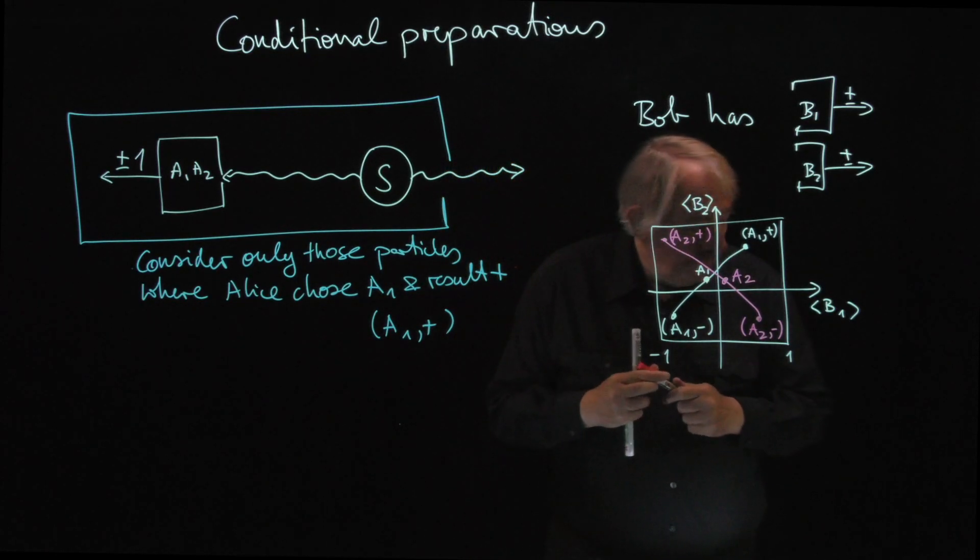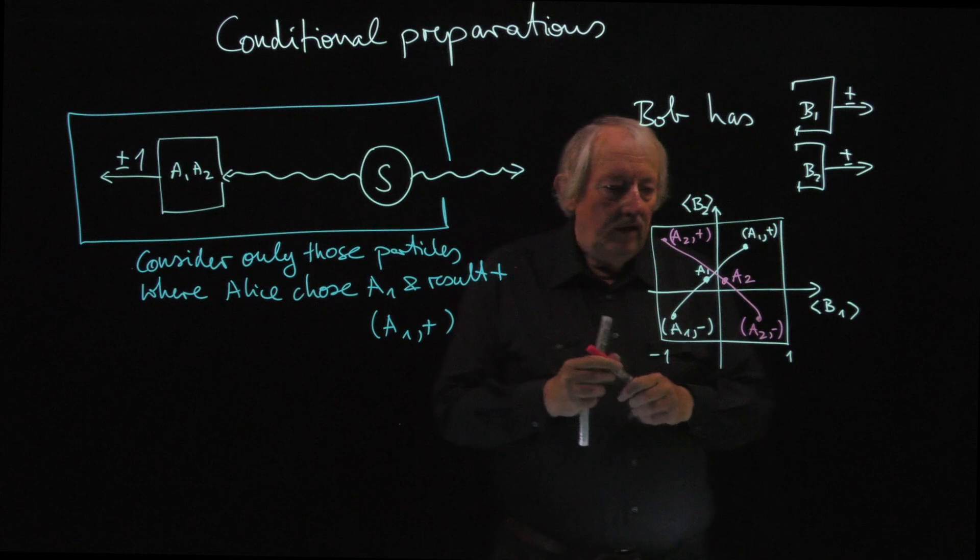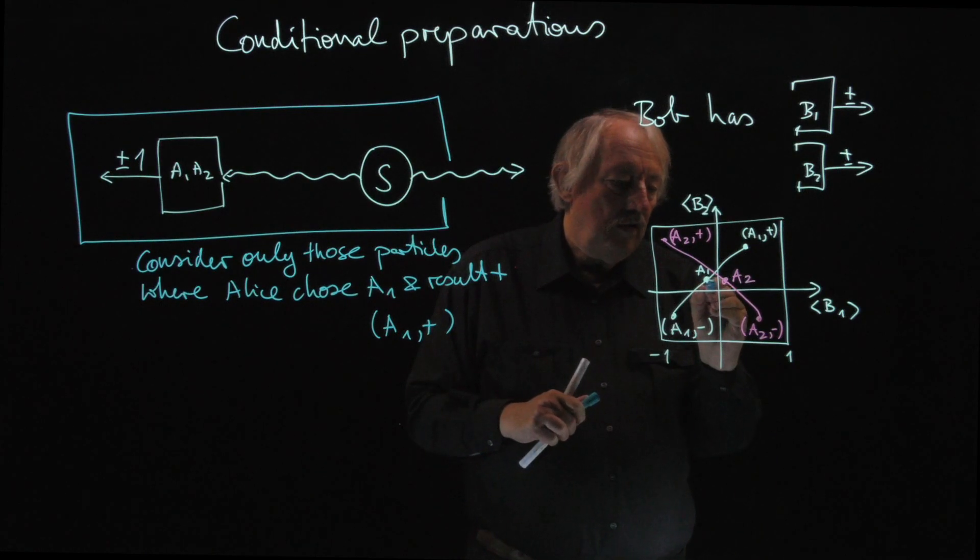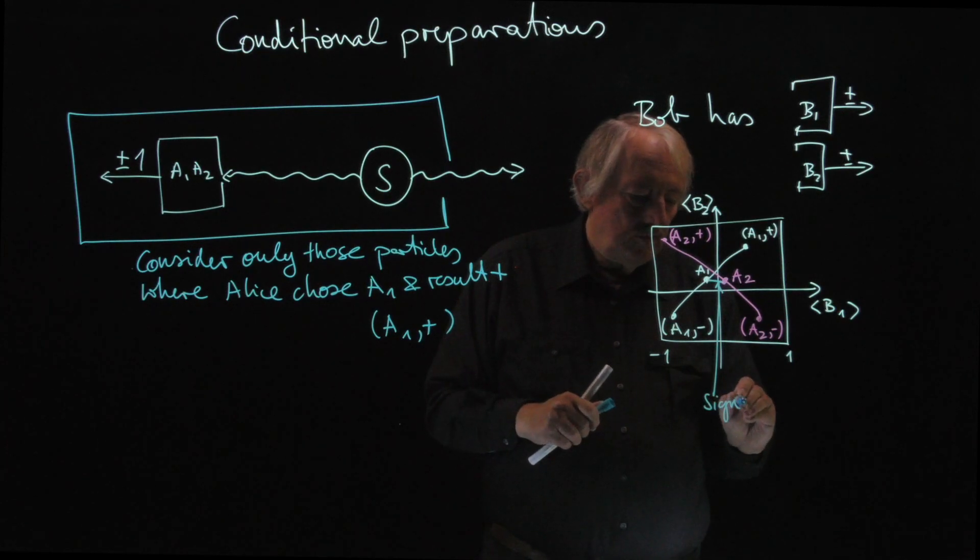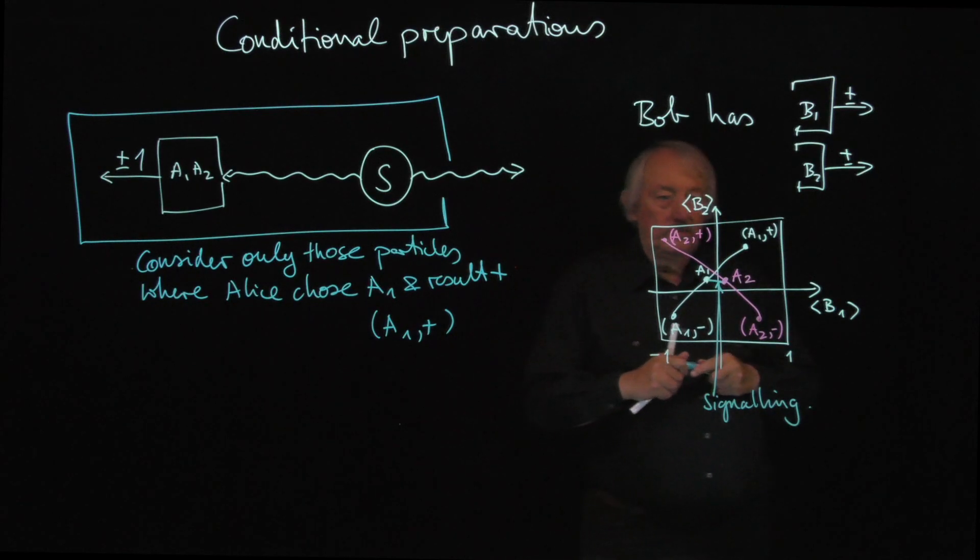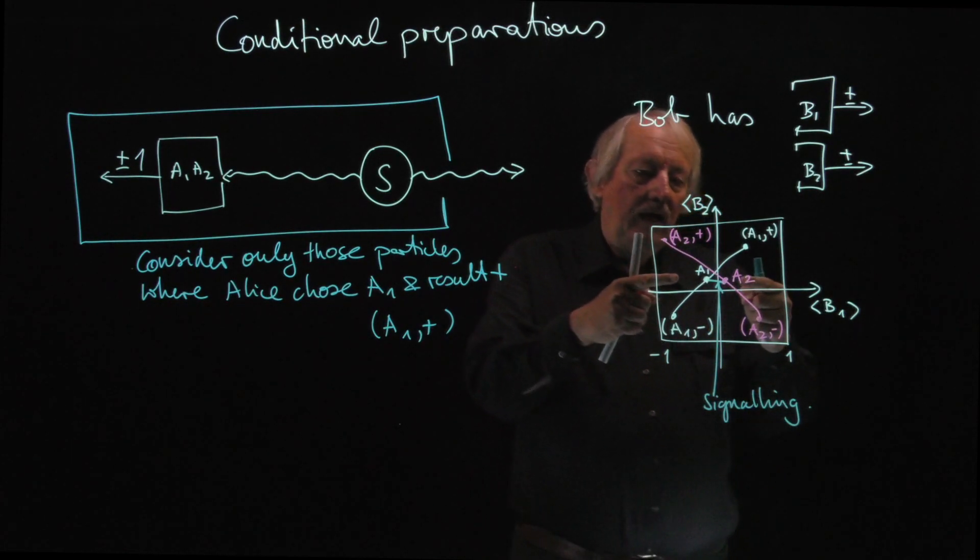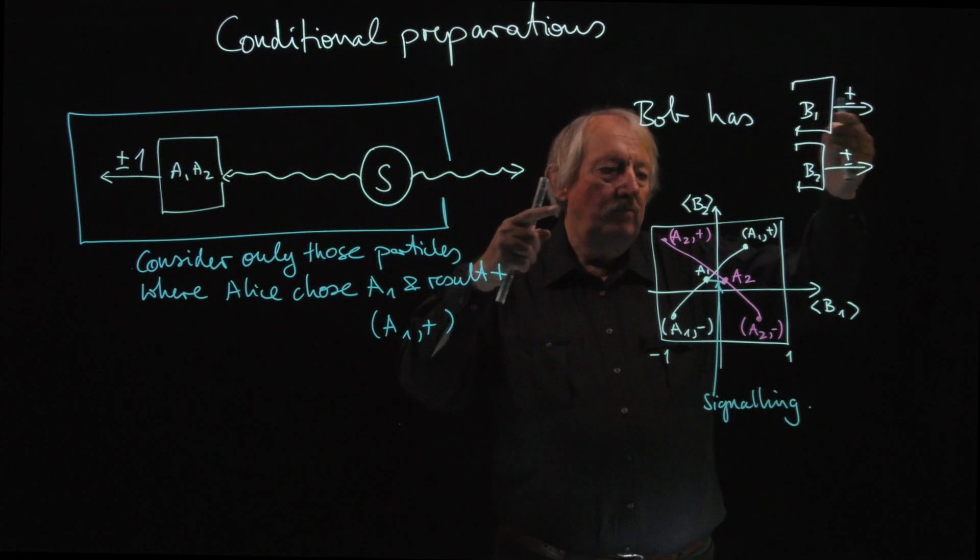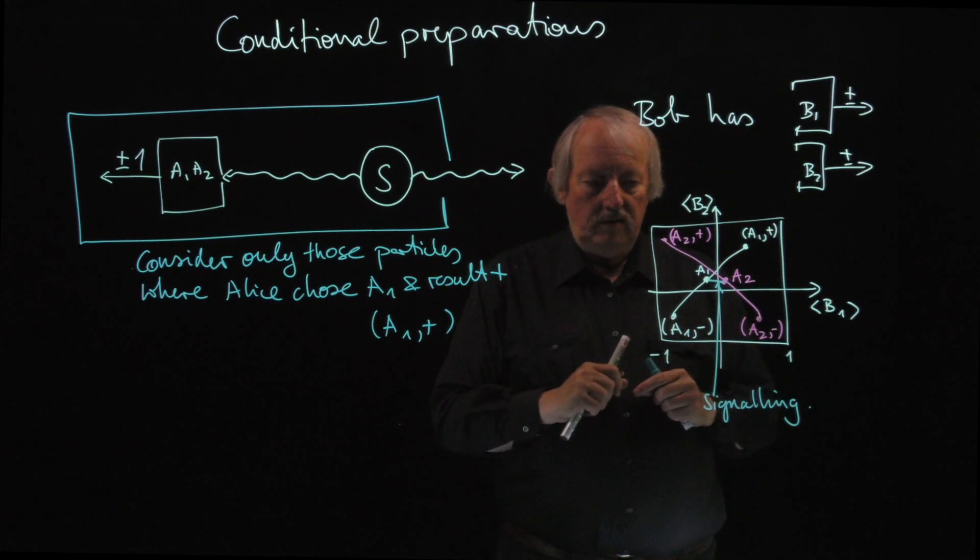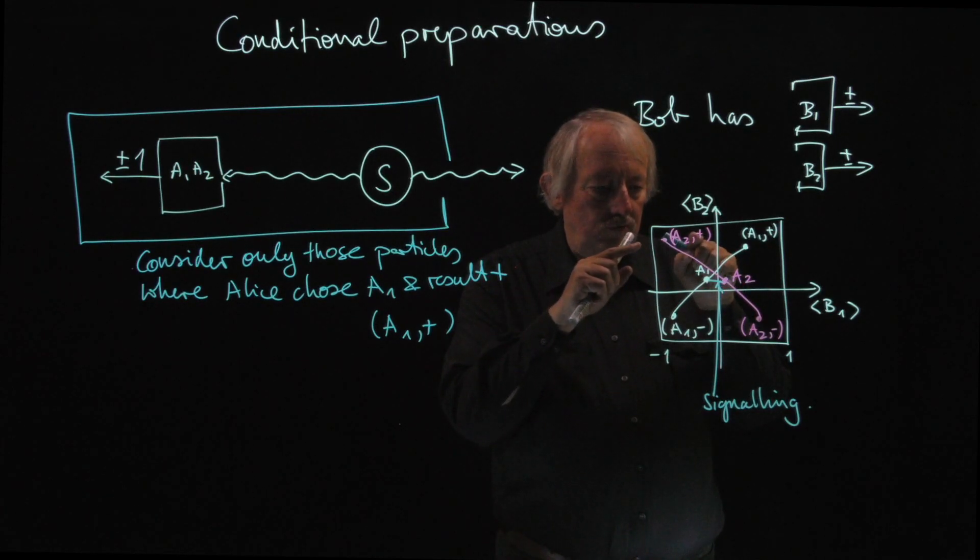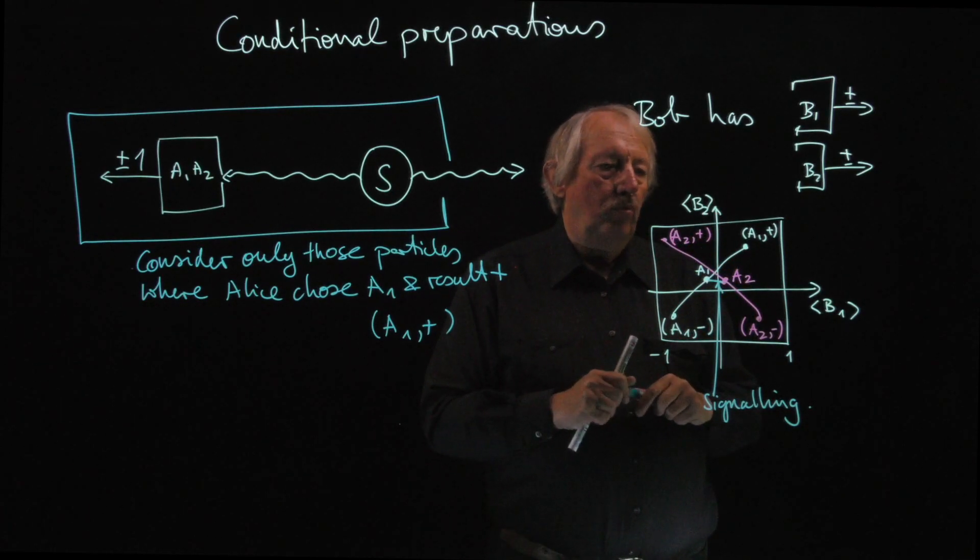Now, here we get signaling. So in this picture, the signaling happens and it happens exactly at this point because they're different. So I just gave that as an example now. This is what we would actually exclude on the basis of causality. Because if Alice just does her measurements, Bob should not be able to detect what she did, not even probabilistically. So these two points actually have to be the same. They have to intersect in exactly the same point.